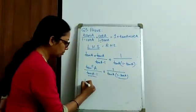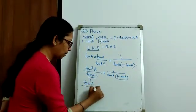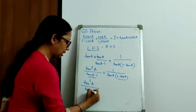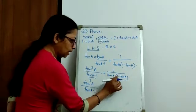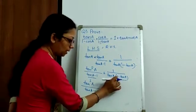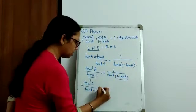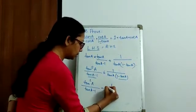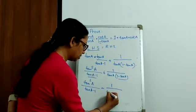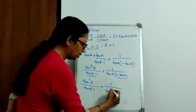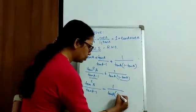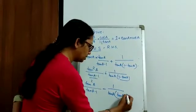So, just have a look, we have tan square A by tan A minus 1. As I said, we have taken the minus sign as common. So, this plus becomes minus and we have our expression as 1 by tan A into tan A minus 1.